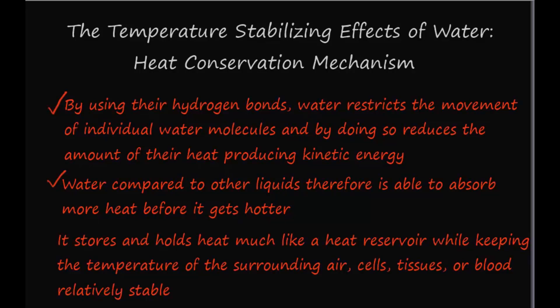Water stores and holds heat much like a heat reservoir, while keeping the temperature of the surrounding air or surrounding cells, tissues, or blood plasma relatively stable. Examples include the lake effect — lake water warms during the summer and then gives off its stored heat during the winter, making the air temperature surrounding the lake area warmer. Another example is that when a lake freezes, ice usually covers the surface and acts as a protective covering, keeping the water temperature below the ice above freezing. Water in human cells and in blood plasma, accounting for up to 95% water, acts as a heat reservoir, trying to maintain homeostasis of the body's internal environment.